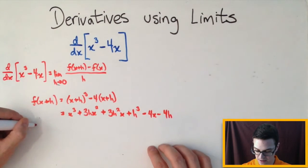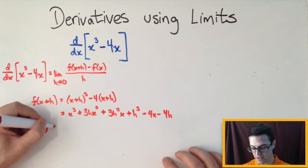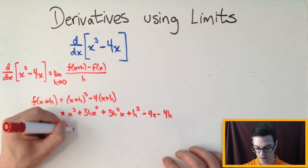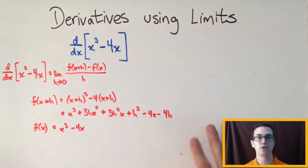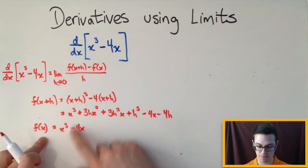Okay, our f of x right here would just be this x cubed minus 4x. So what I'm going to do now is substitute this in for the f of x plus h and then this in for the f of x.